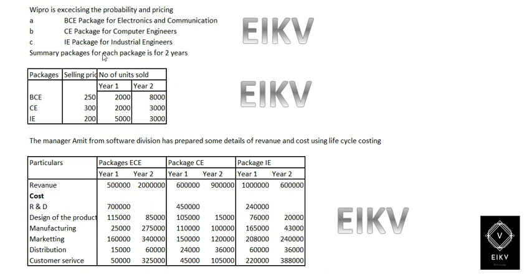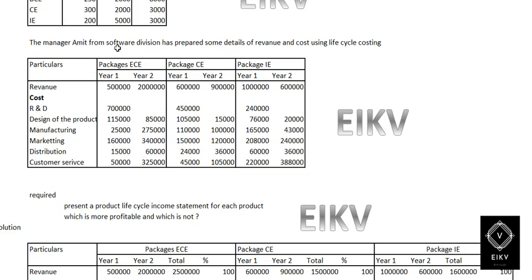A summary of the packages for the next two years is given — including the selling price and the number of units sold for three years. The BCE, C, and IE per unit selling price and the respective two years quantity of sales are also given here.